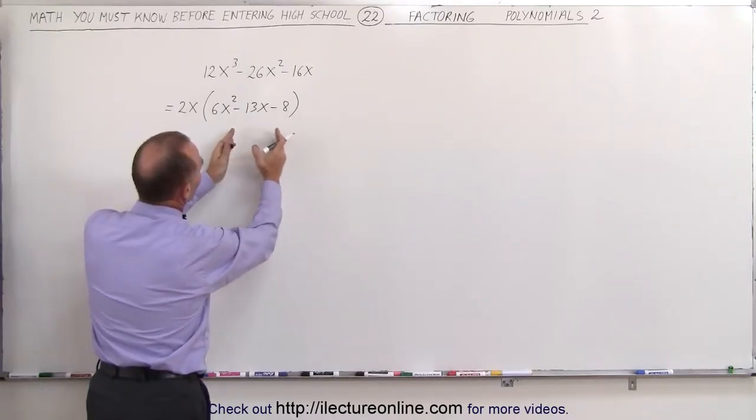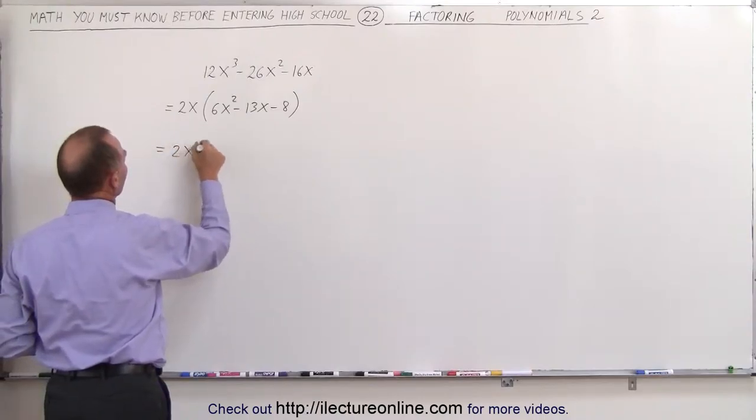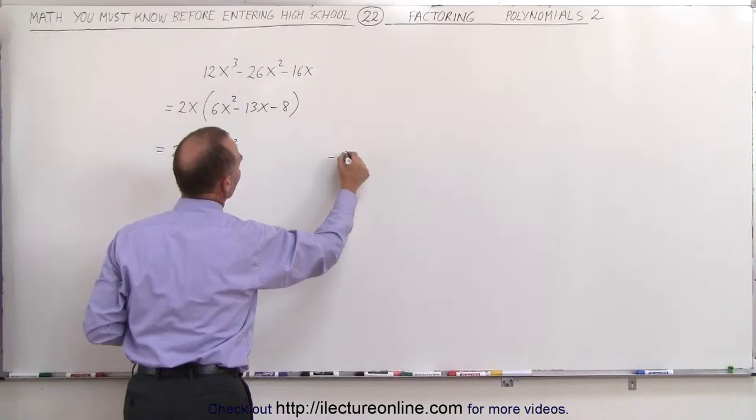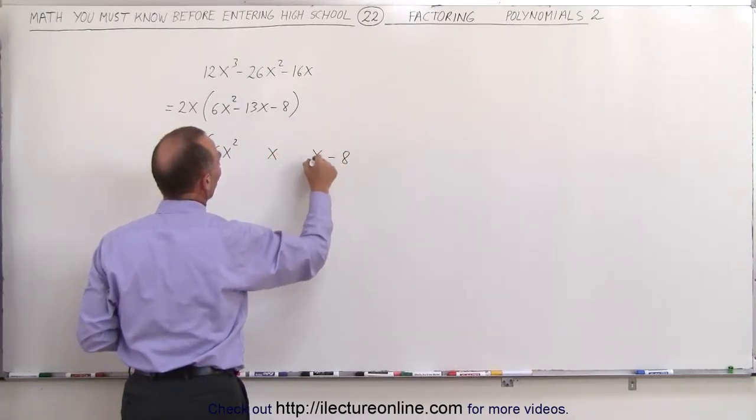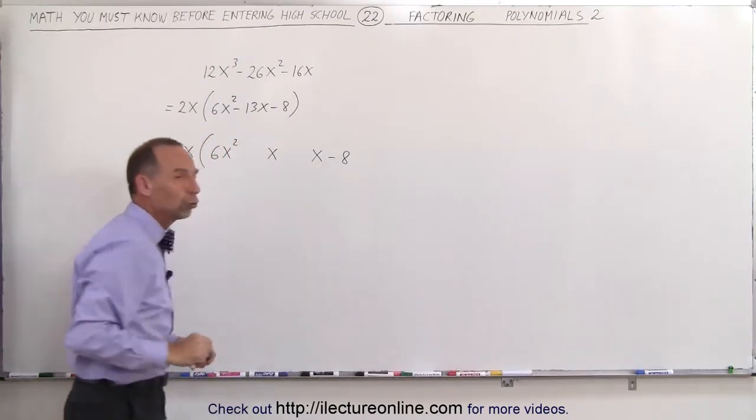We're going to take the middle term and write it as two separate middle terms. So this can be written as 2x times the quantity 6x squared. We write the minus 8 over here. And then we'll write the x term twice, because we're going to write minus 13x as a sum of two terms.